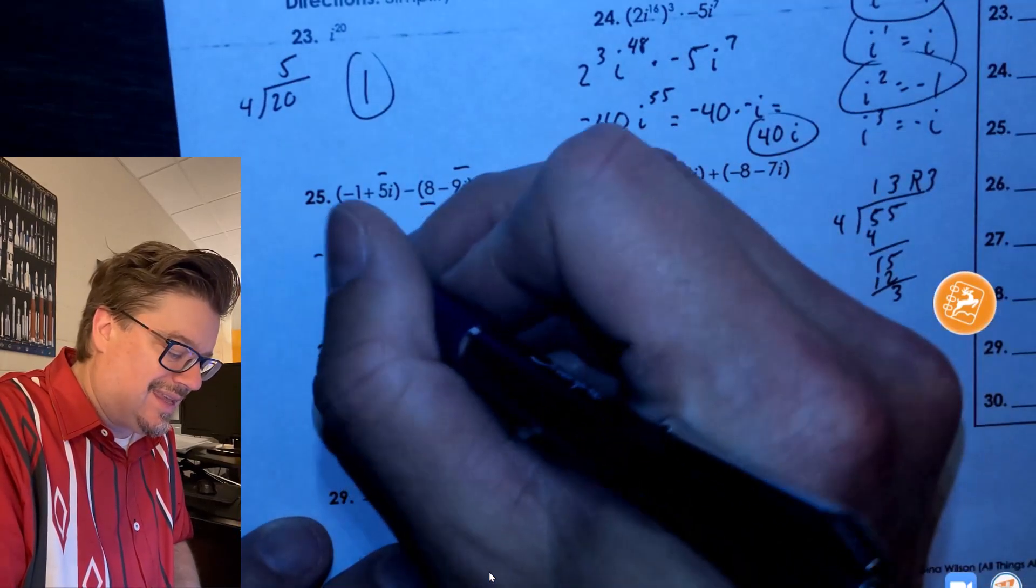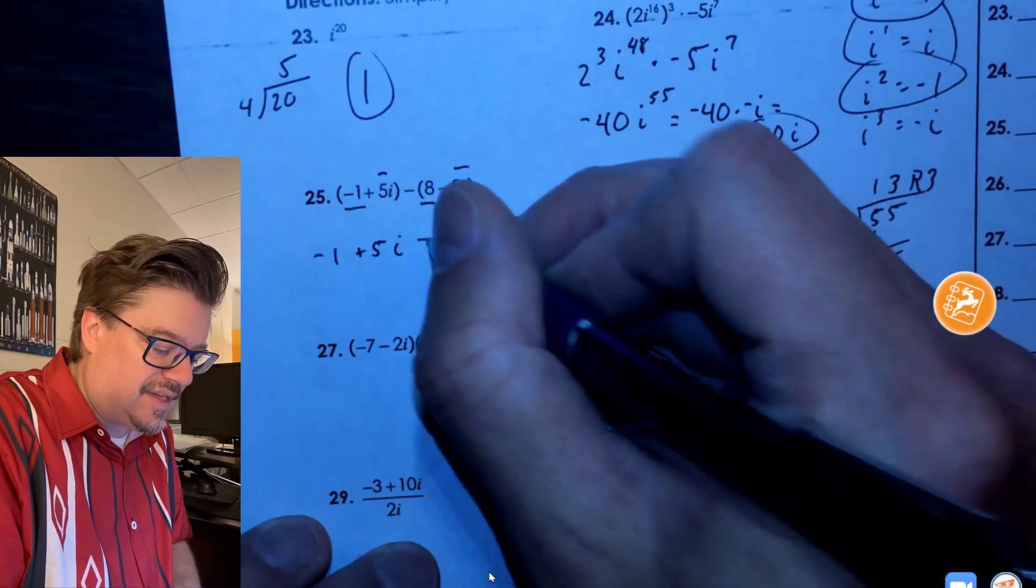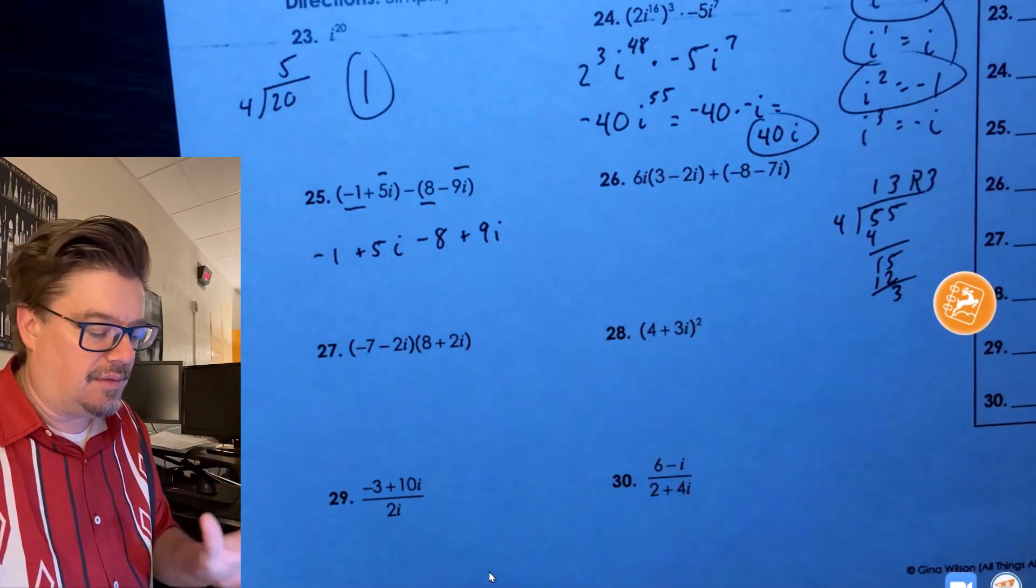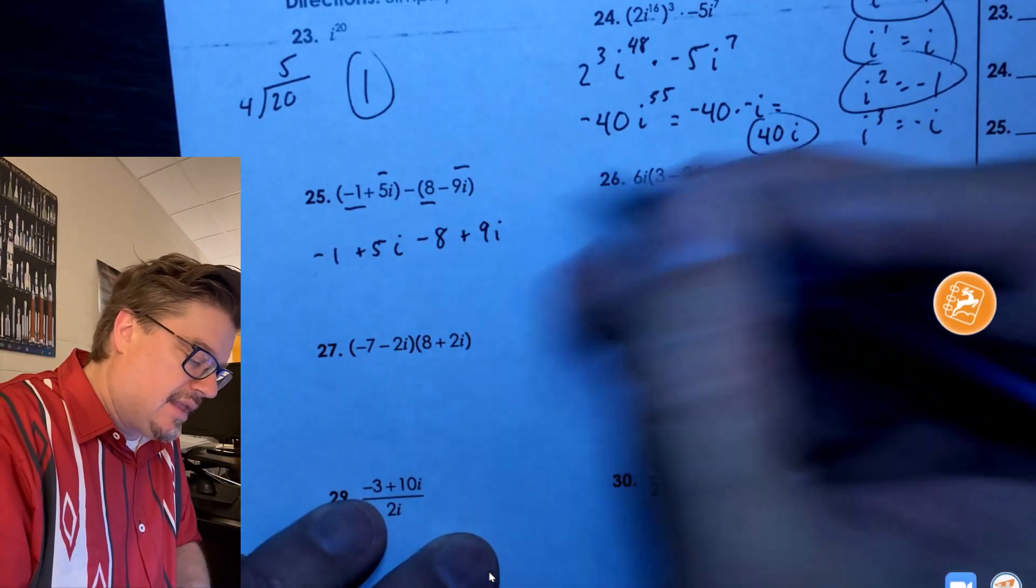All right, these are like combining like terms. These guys are one, these guys are the other. So all I got to do now is rewrite this so that I distribute the negative sign to both of the terms. This is usually the only time that people make mistakes. So I'm going to add these two guys: negative 9 plus 14i, and that's it.